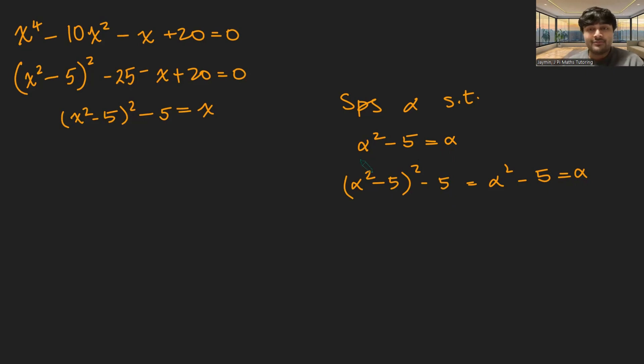Or in other words, if alpha is a solution to this quadratic, it's also a solution to this quartic. If I just rearrange this, I get alpha squared minus alpha minus 5 equals 0. So by the factor theorem, this tells me that x squared minus x minus 5 must be a factor of this quartic.